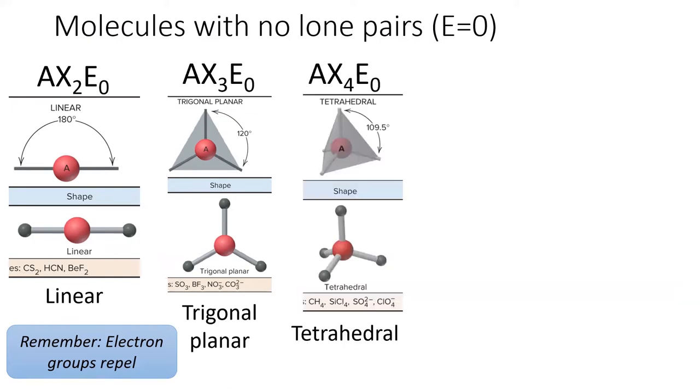When four atoms are bonded to a central atom, their geometry is tetrahedral. The bond angle is 109.5 degrees.